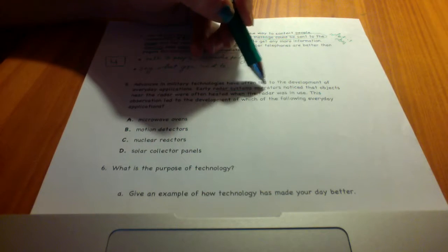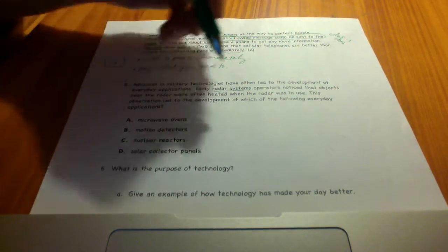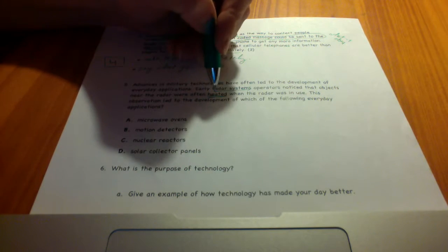Early radar systems operators noticed that objects near the radar were often heated when the radar was in use. All right, so radars used to heat things.